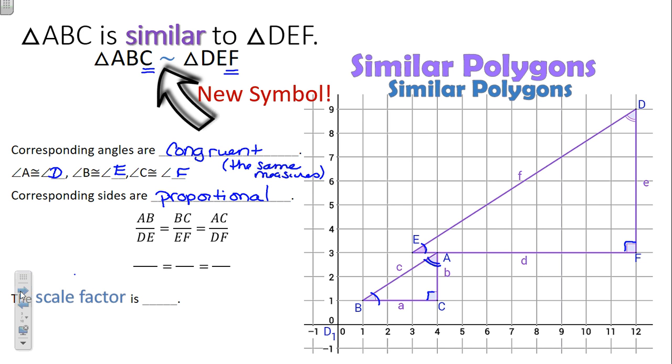So the distance between A and B over the distance between D and E has to be the same. Corresponding, A to B, this distance over this distance has to be the same as the distance between B and C over the distance between E and F. Corresponding, A to B over D. So blue is to blue, as red is to red, as green is to green.